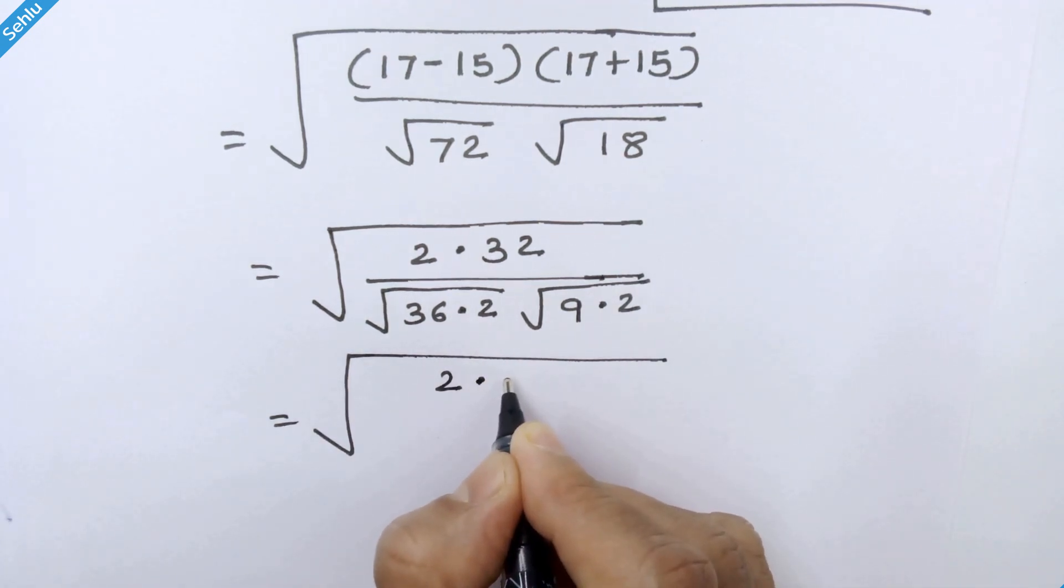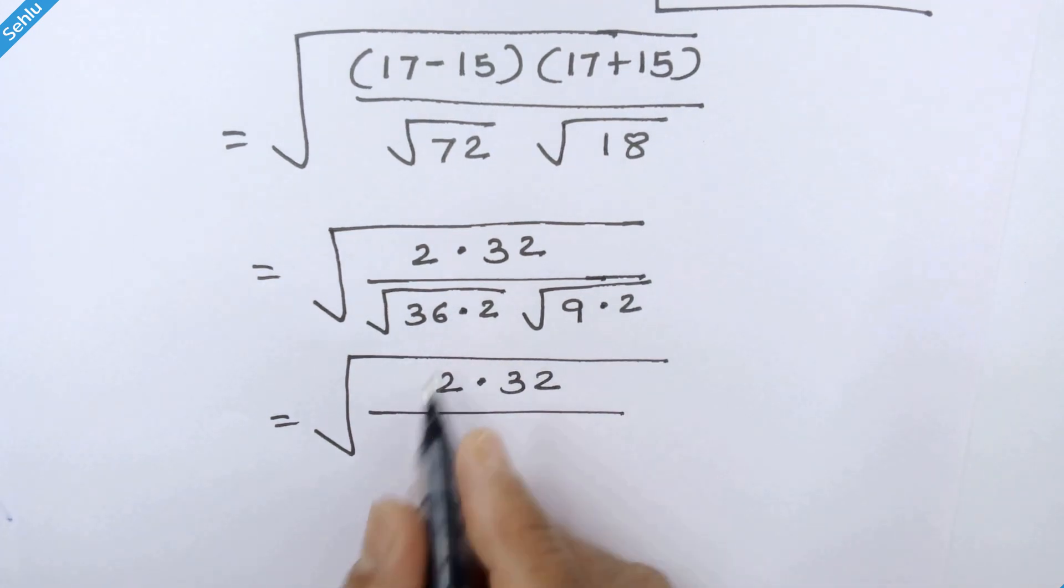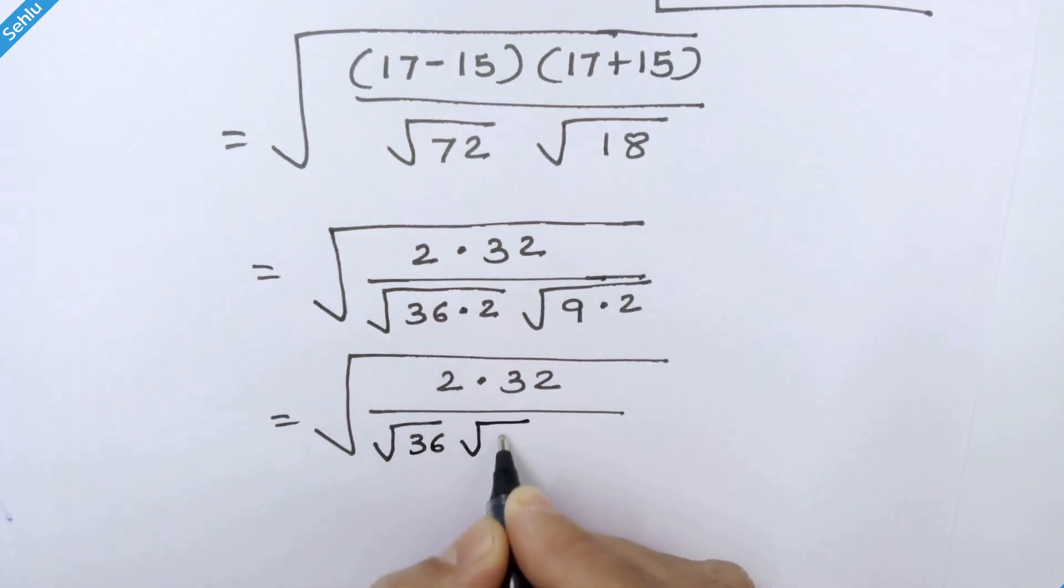So we have 2 times 32 over, we can write this square root separately. So it will be square root of 36 times square root 2 times square root 9 times square root 2.